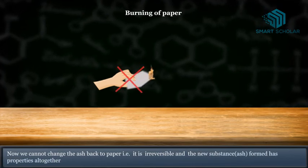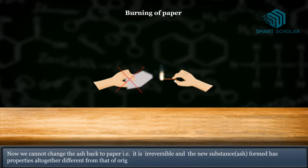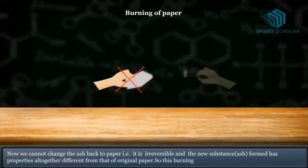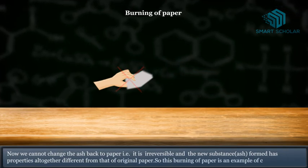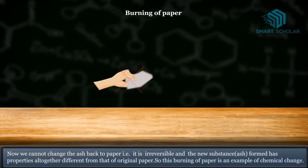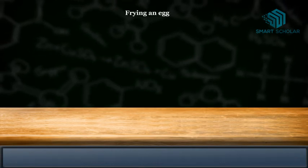The new substance, ash, has formed properties altogether different from that of the original paper. So this burning of paper is an example of chemical change.